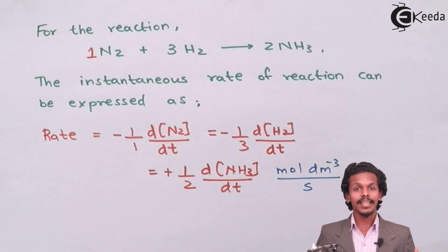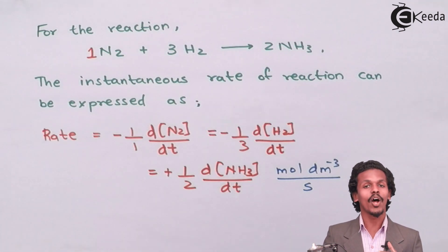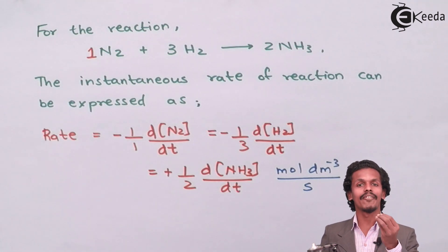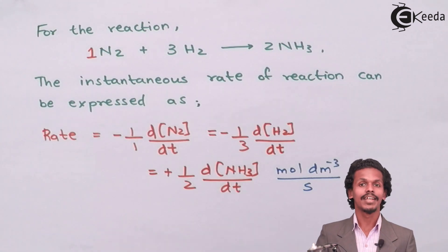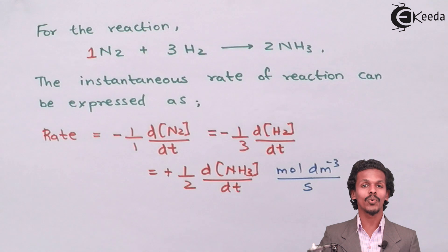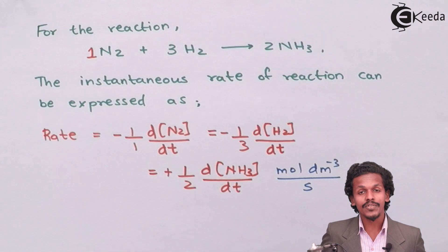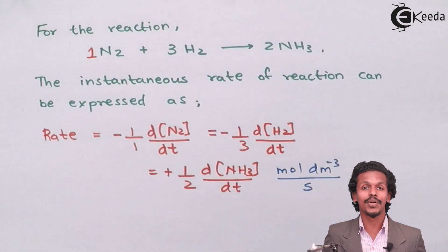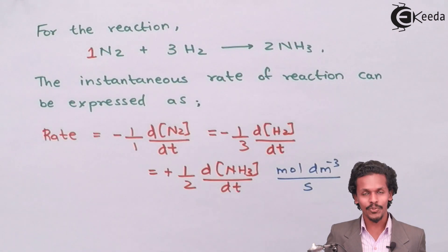So by this, we have got a clear idea of what rate of reaction is, how to write the average rate of reaction, and how to write the instantaneous rate for a particular reaction. I hope you have got a good understanding of this topic. Thank you friends for watching this video. Please don't forget to subscribe to e-Kida channel. Thank you so much.